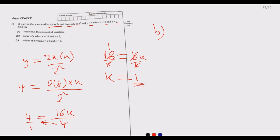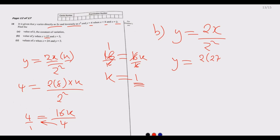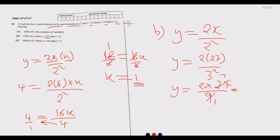For part b, we find the value of y when x equals 27 and z equals 3. Since k equals 1, the formula simplifies to y equals 2x over z squared. Substituting: y equals 2 times 27 over 3 squared equals 54 over 9, which equals 6. So y equals 6.